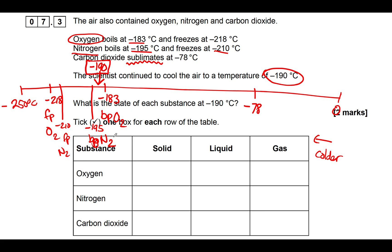Oxygen at minus 190°C — it's colder than the boiling point of oxygen, so minus 190 is too cold for oxygen to remain a gas, but it's too warm for it to have frozen. We're in between the freezing point and the boiling point, so oxygen must be a liquid.